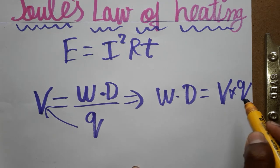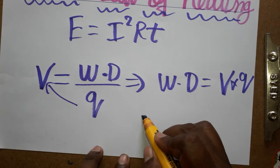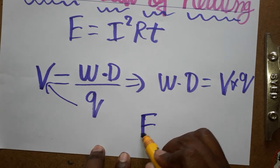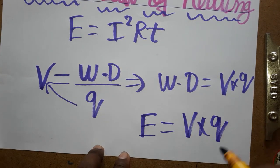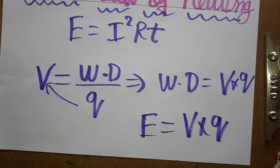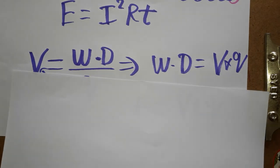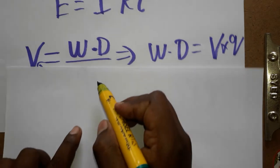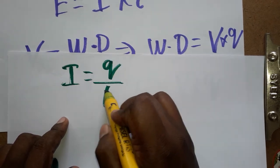Work done we can call it energy. So energy is equal to voltage into charge — energy is equal to V times Q. Now, Q is equal to — according to the definition of current — current is equal to charge by time.